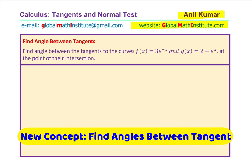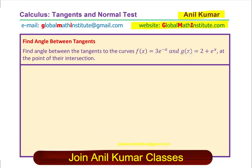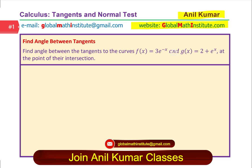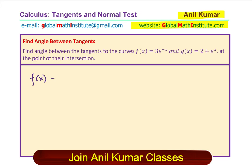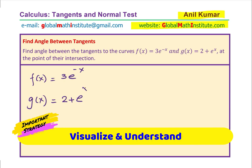The question is: find the angle between the tangents to the curve f(x) = 3e^(-x) and g(x) = 2 + e^x at the point of their intersection. We need to find the angle between the tangents at the point of intersection.